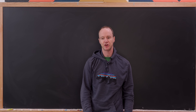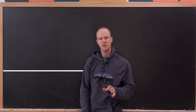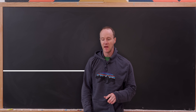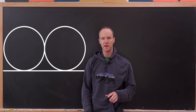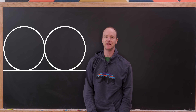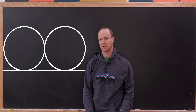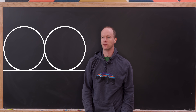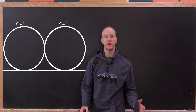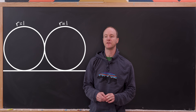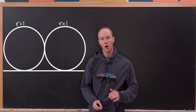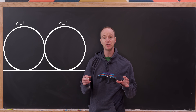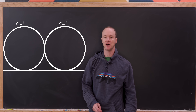Today we're going to look at a really nice geometry problem. We start with a straight line and then put two circles tangent to that straight line. Those two circles are of radius 1, and we roll them until they're tangent to each other. So we've got a straight line and two circles all touching.